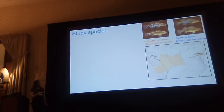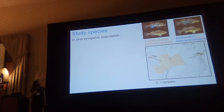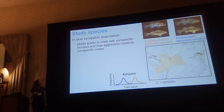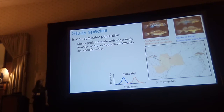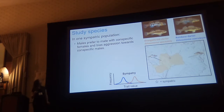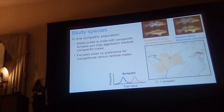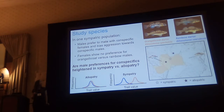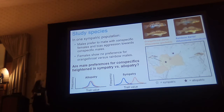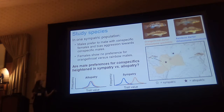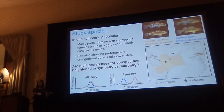To start, we're going to focus on one of these orange-throat splits and the rainbow darter. Going into this, I knew that in at least one sympatric population, in one sympatric river drainage, it appeared that males prefer to mate with conspecific females and bias aggression towards conspecific males, and that females show male preference for orange-throat versus rainbow darter males. I wanted to expand this analysis to compare sympatric and allopatric populations, and then to ask whether male preferences for conspecifics are stronger in sympatry versus allopatry, which is the critical test for character displacement.